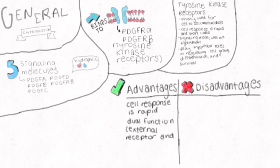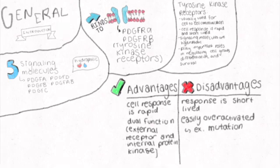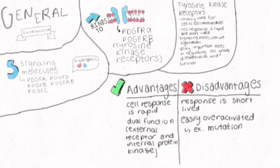Not only is the cell response rapid, but tyrosine kinase receptors have a dual function: an external receptor and an internal protein kinase. However, the response to these receptors are short-lived and they can easily be over-activated, often by mutation.